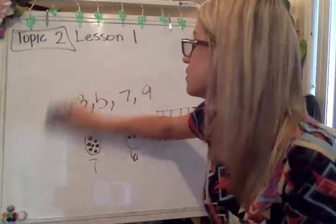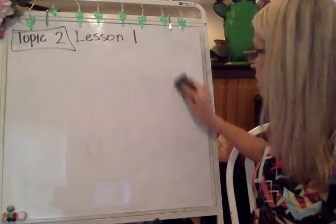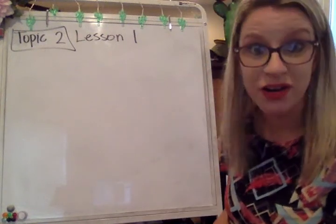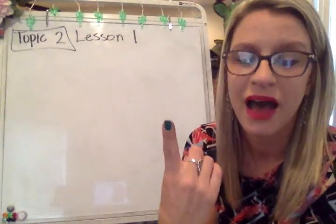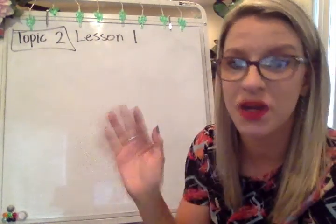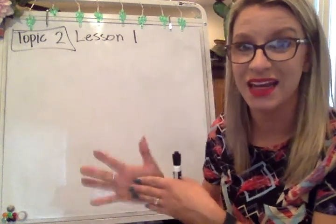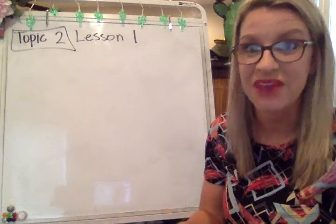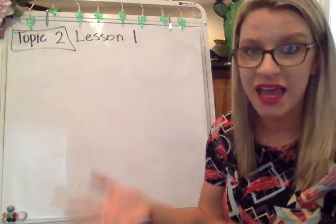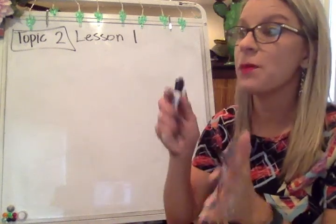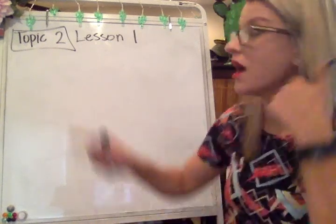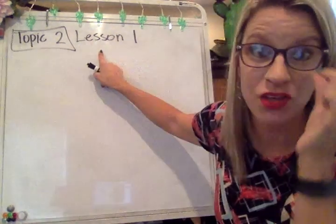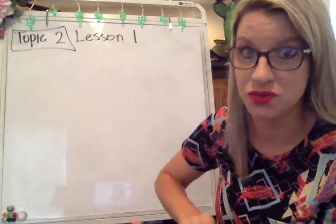Let's talk about skip counting. Something that you learned in kindergarten was to skip count by tens: 10, 20, 30, 40, 50, 60, 70, 80, 90, 100. You've also learned a lot about skip counting by fives: 5, 10, 15, 20. But for this topic — topic two, lesson one — I want you to think about skip counting by twos.